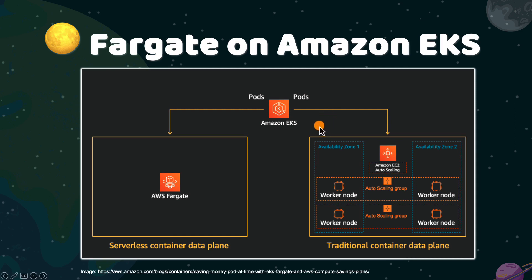EKS is called the control plane. The pods are running on the data plane. EKS has two data planes: the EC2-based data plane and the AWS Fargate data plane. EKS can use one of them, or use both types of data plane together.